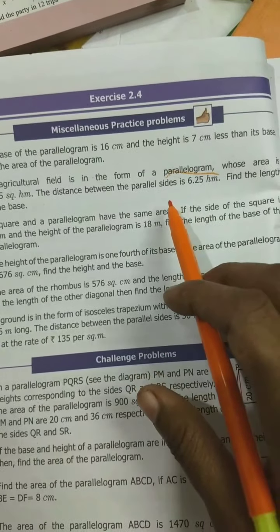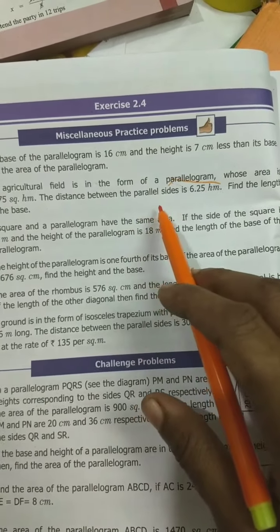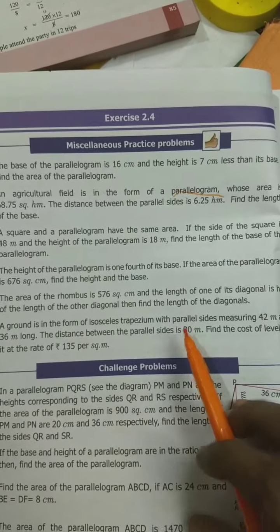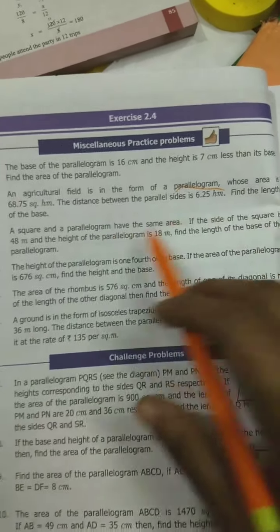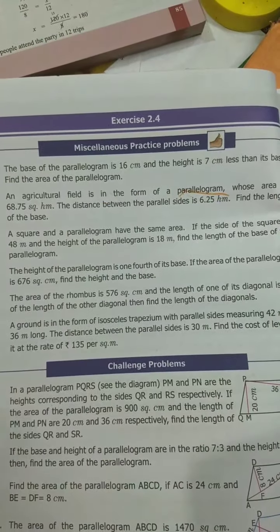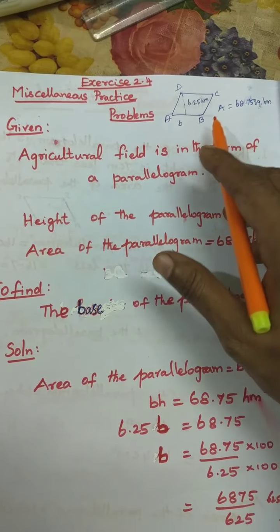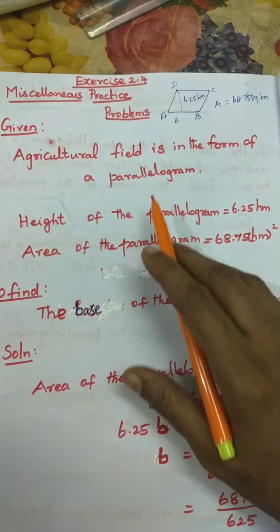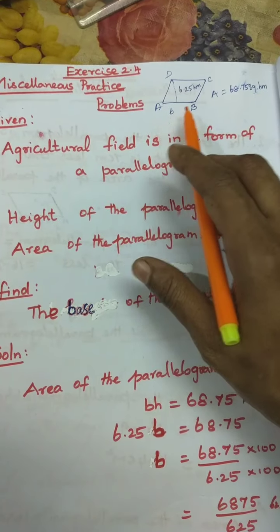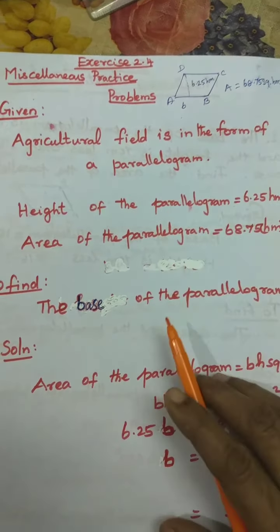The distance between the parallel sides — that is the height — is given as 6.25 hectometres. You have to find the length of the base. First we shall draw the diagram. Height is given; you have to find the base; area is given.